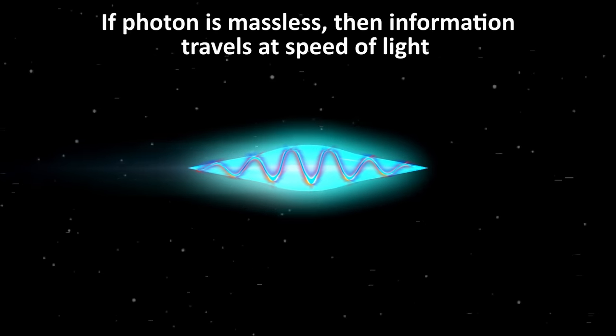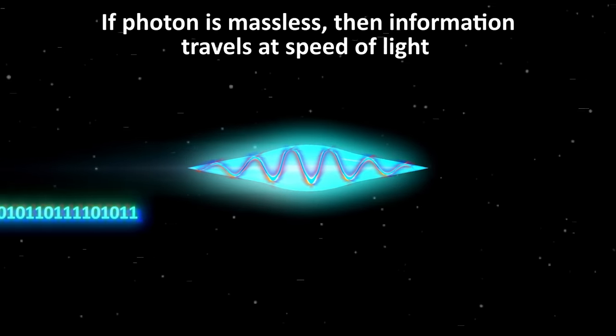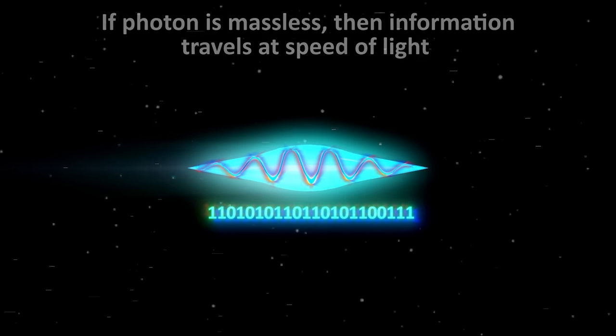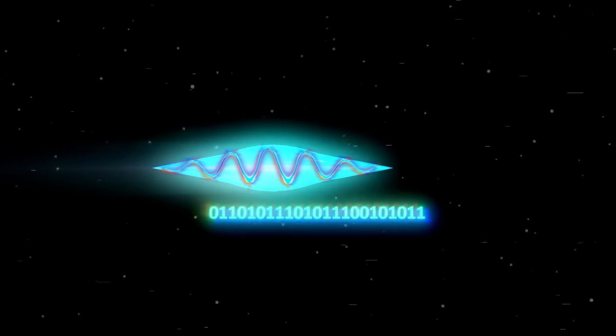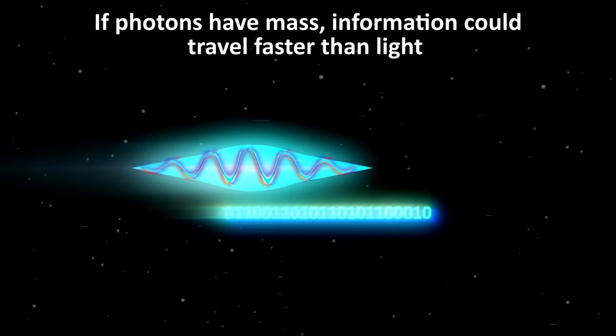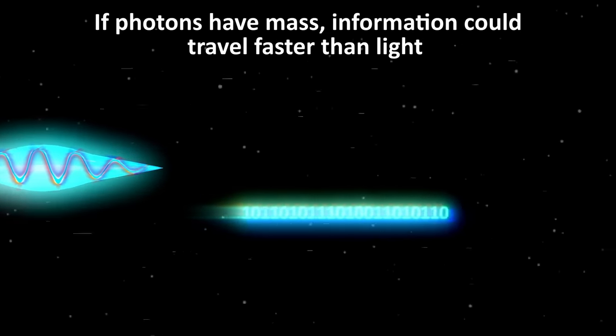If photons, which make up light, are truly massless, then the speed limit of information is equal to the speed of light. But if photons have a slight mass, then that would mean that information could travel faster than light. Now you might think this would be a problem, but it really wouldn't be.